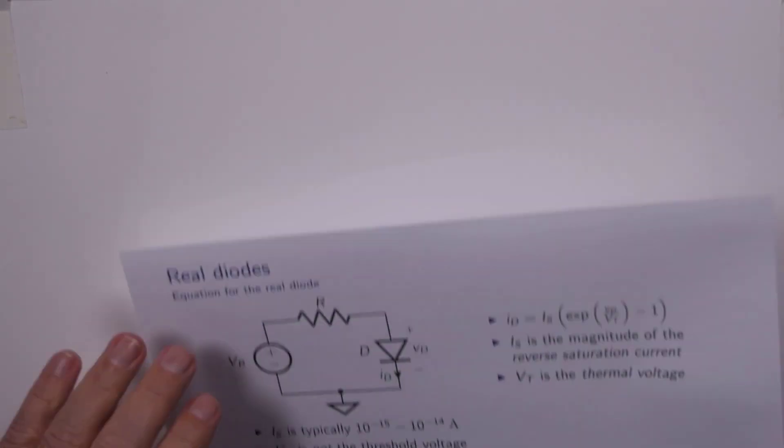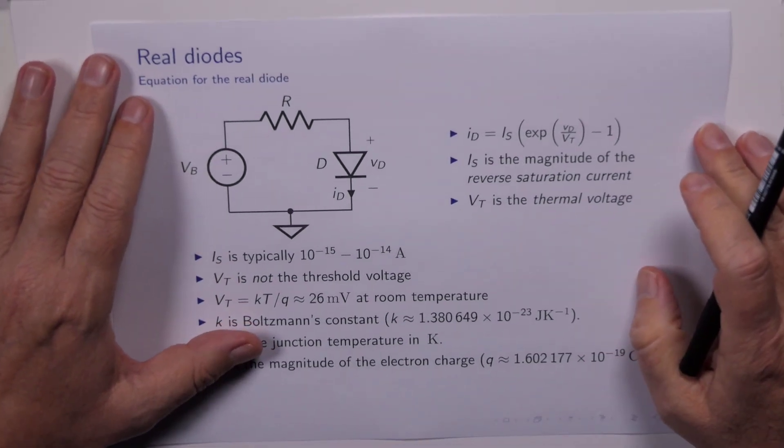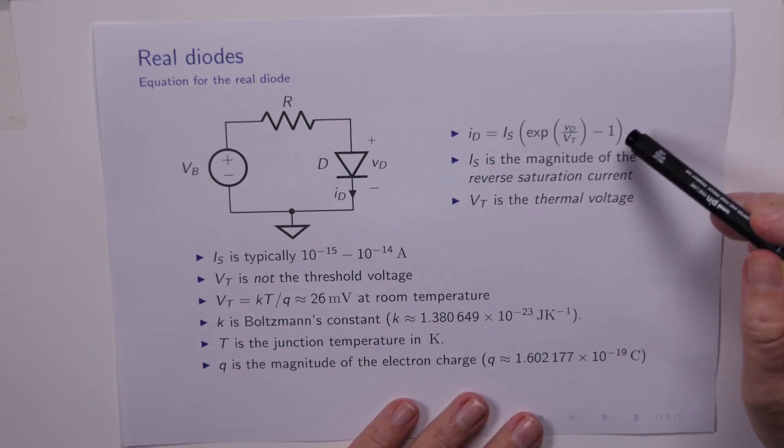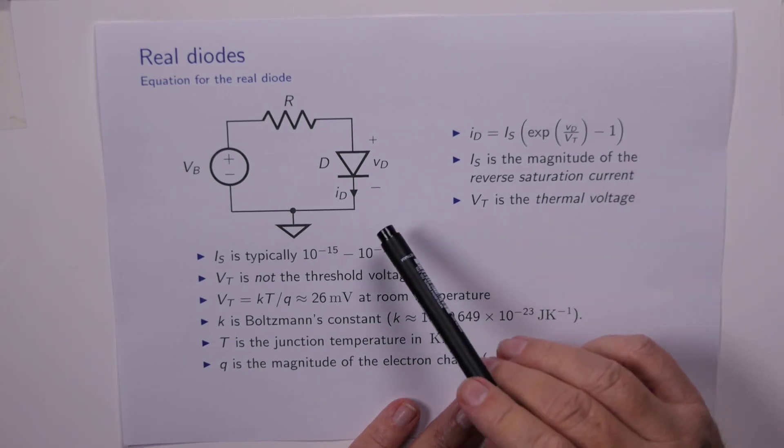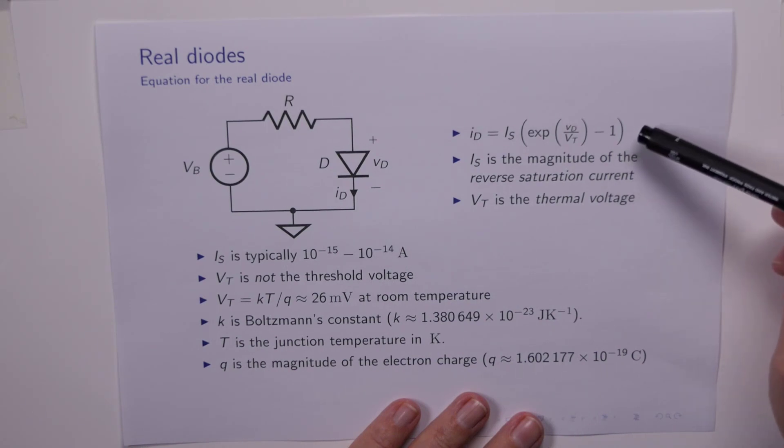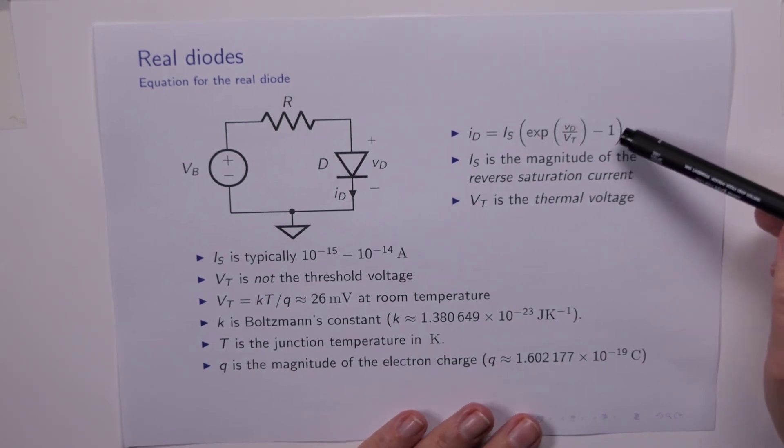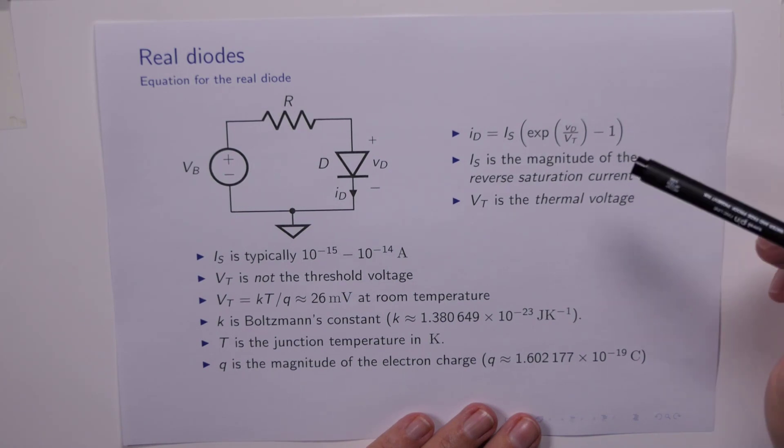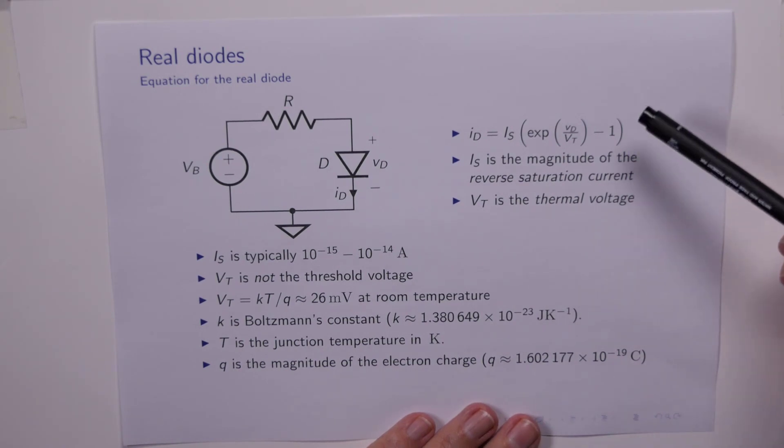Now, amazingly, it's possible to derive an equation for the terminal characteristics of the real diode. It involves knowledge of the physics of the majority and minority carrier transport across the PN junction. We're not going to derive it, but this is the result. So this equation describes both forward bias and reverse bias, but it does not describe reverse breakdown. There are other versions of this equation which include reverse breakdown, but we won't be looking at them. So there's a few components to this equation.